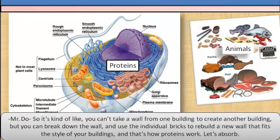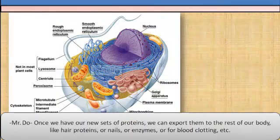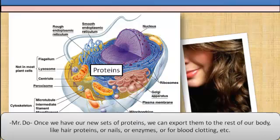Later on, you'll learn about transcription and translation, the process for creating proteins. But for now, just know that amino acids are transferred to the ribosome and changed into proteins. Once we have our new set of proteins, we can export them to the rest of the body — like hair proteins, or nails, or enzymes, or for blood clotting, and so on.